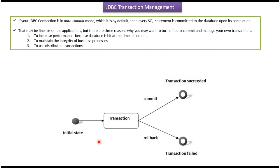Here you can see the diagram. This will be the initial state, and inside a transaction you can execute multiple SQLs. If all SQLs are successful then we can commit the changes in the database and the transaction will be succeeded. If any one of the SQLs fails within the transaction then we can roll back the entire transaction, so in that case the transaction is failed.